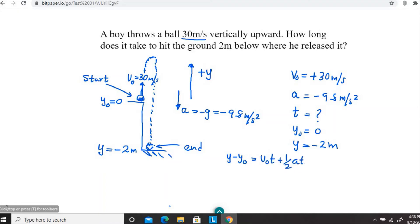Let's look at the information provided. V naught is given, plus 30 meters per second. The acceleration a is known, minus 9.8 meters per second squared. We need to find the time because that's what they're asking. Y naught equals zero, y final equals minus 2 meters.